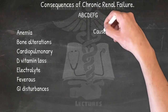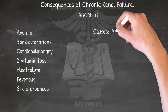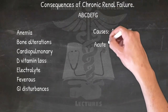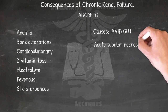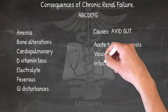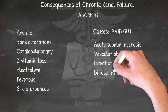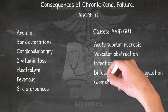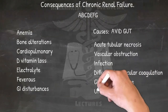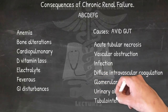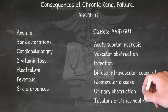Causes of renal failure — AVID GUT: Acute tubular necrosis, Vascular obstruction, Infection, Diffuse intravascular coagulation, Glomerular disease, Urinary obstruction, and Tubulointerstitial nephritis.